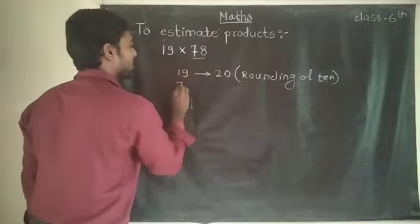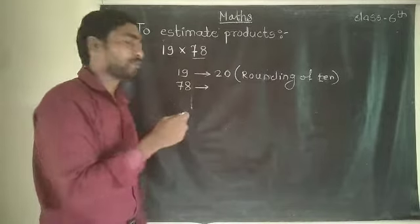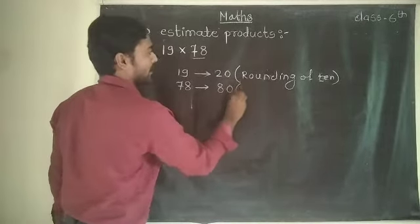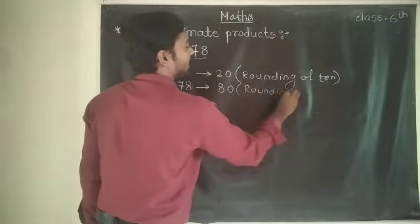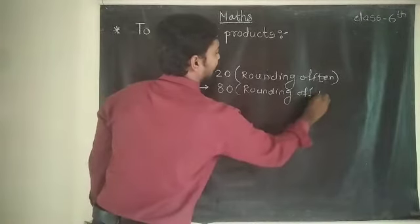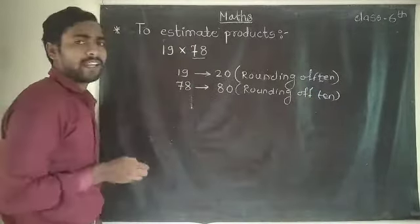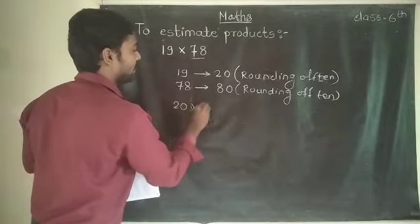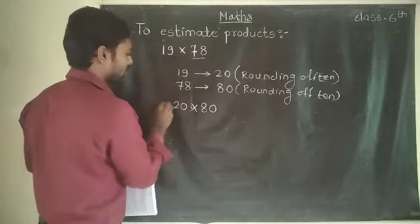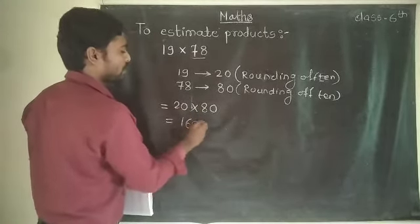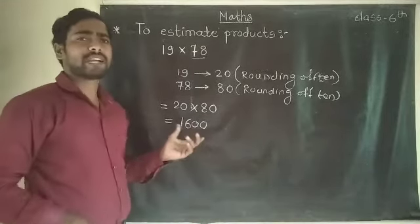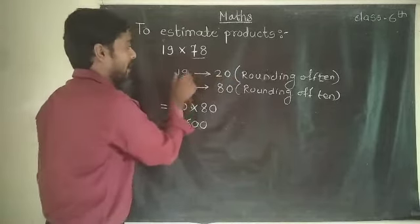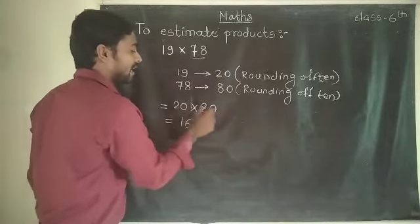Now for 78, we also find the rounding of 10. The nearest tens of 78 is 80. So 19 rounds to 20 and 78 rounds to 80. Now do the multiplication: 20 multiplied by 80. Simply 2 times 8 is 16, and with the zeros it is 1,600. So the estimated product is 1,600.